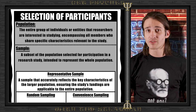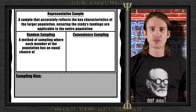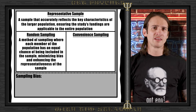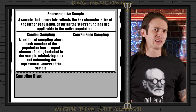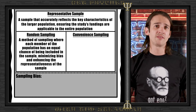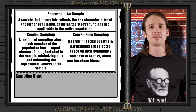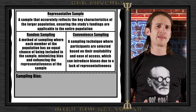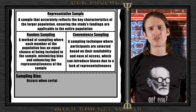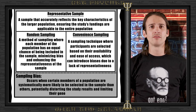Convenience sampling is a method where participants are selected based on their availability and willingness to participate. While easier and quicker, it can lead to sampling bias — where certain characteristics are overrepresented or underrepresented — affecting the validity of the study results. Now that we've selected our participants, it's time to assign them to different groups. Experiments can have both experimental and control groups. The experimental group receives the treatment or intervention being tested, while the control group does not, allowing us to see if the treatment really has any effect.